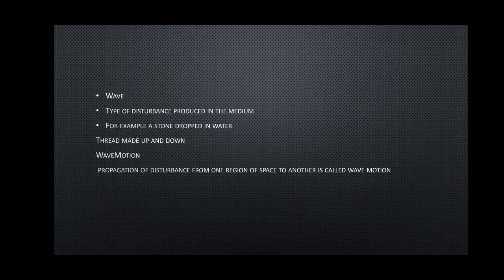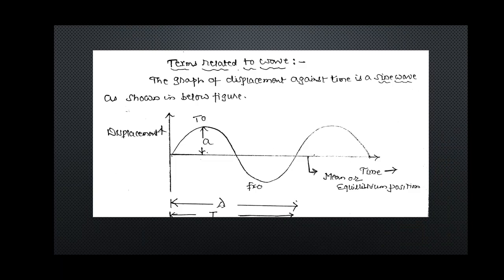Wave motion is very important to understand the chapters of light, sound, and electronic communications — all these are explained on the basis of wave motion. Now let us understand the terms related to waves. The important terms include: oscillation or cycle, wavelength, wave period or time period, and frequency.